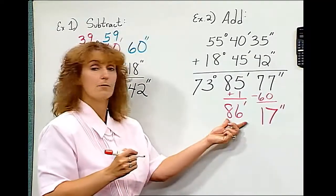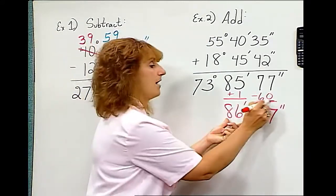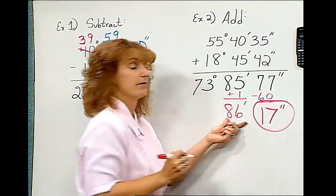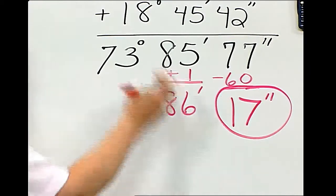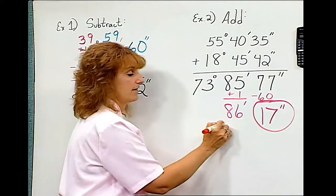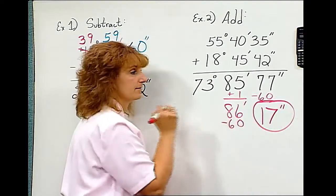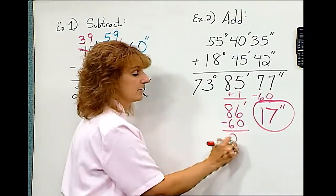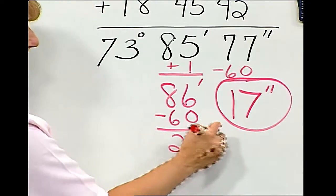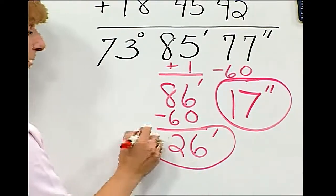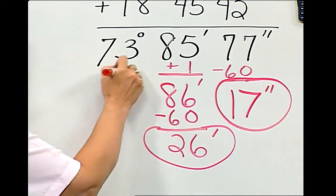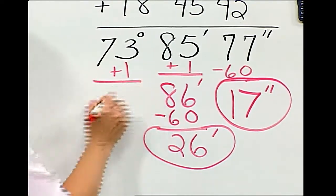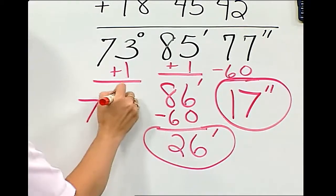But that's more than a degree. I'm going to circle this number so I remember it's part of my answer. 86 minutes being more than a degree. There are 60 minutes in a degree. That leaves me with 26 minutes. That's going to be part of my answer. But that 60 minutes comes over here as a degree. That gives me 74 degrees.